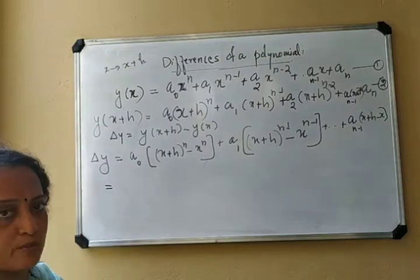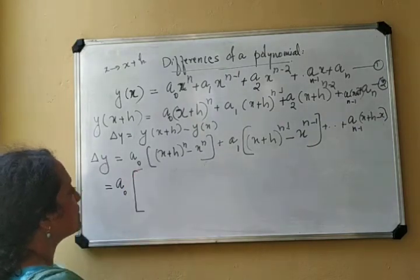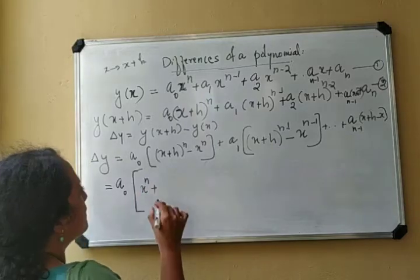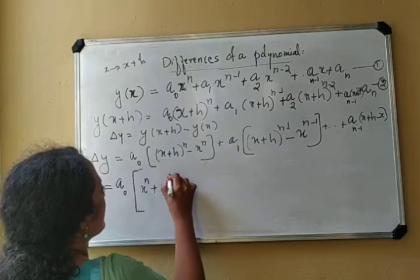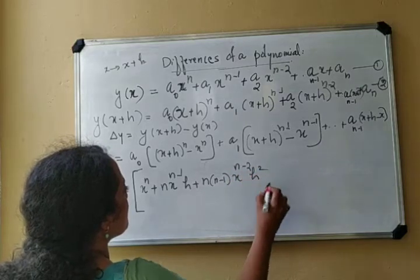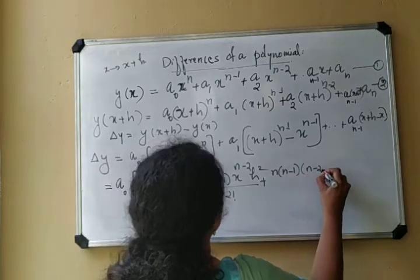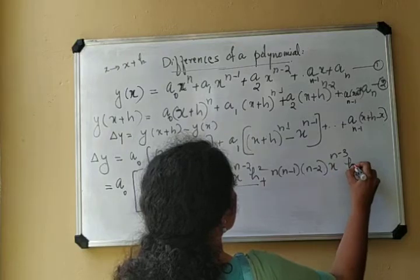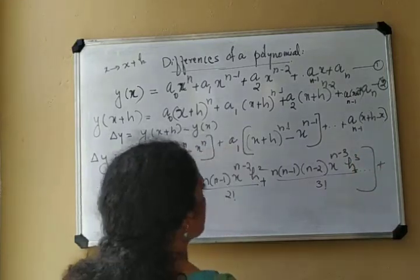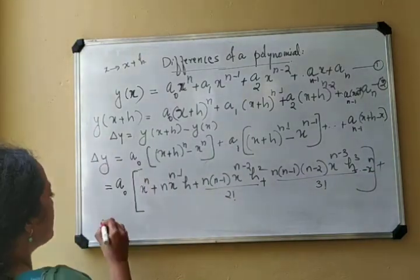We can now expand this using the binomial theorem. So (x+h)^n = x^n + n·x^(n-1)·h + n(n-1)·x^(n-2)·h²/2! + n(n-1)(n-2)·x^(n-3)·h³/3! + etc. The last term is h^n, so minus x^n.